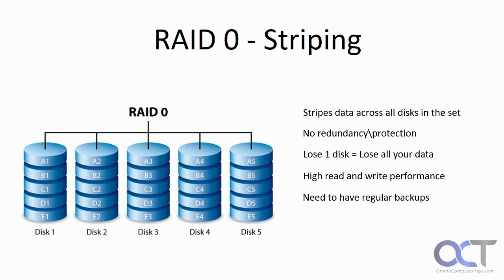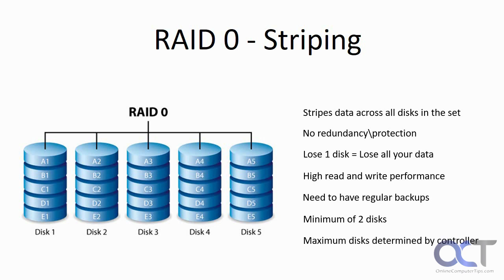Since RAID 0 doesn't have any redundancy, you're going to have to do regular backups if it's important data. A lot of people will use RAID 0 for non-important stuff just to get the speed if they're not too concerned about having backups. You do need a minimum of two disks to have a RAID 0 set, and the maximum number of disks is determined by your RAID controller or software based on how many it can handle.